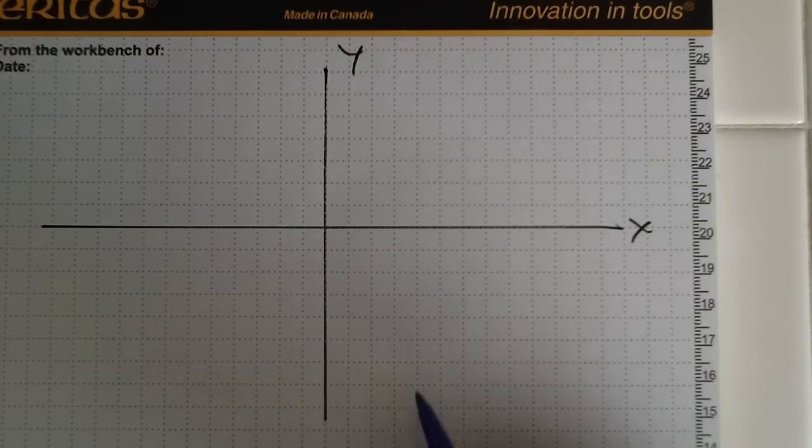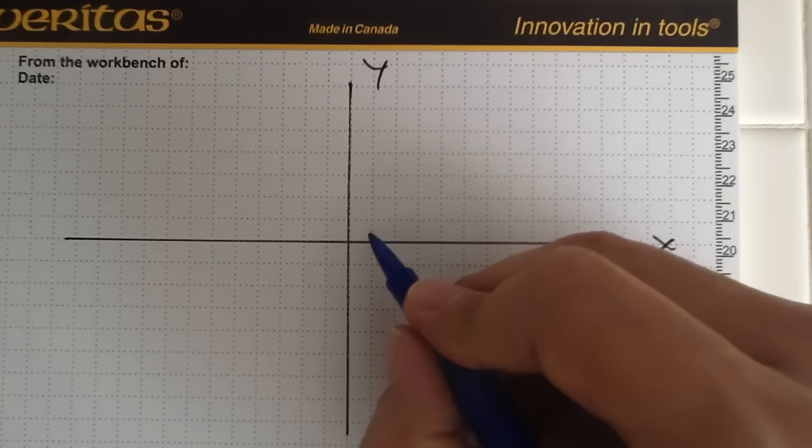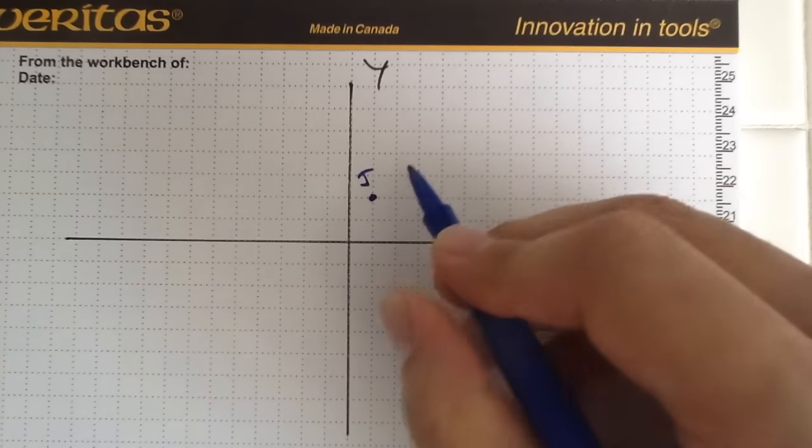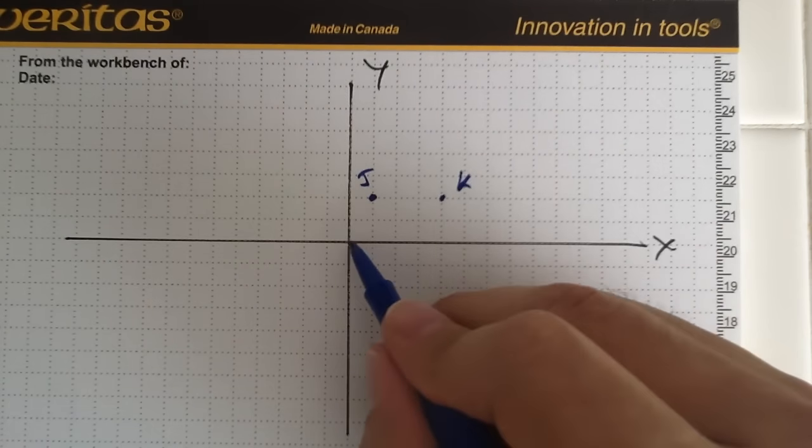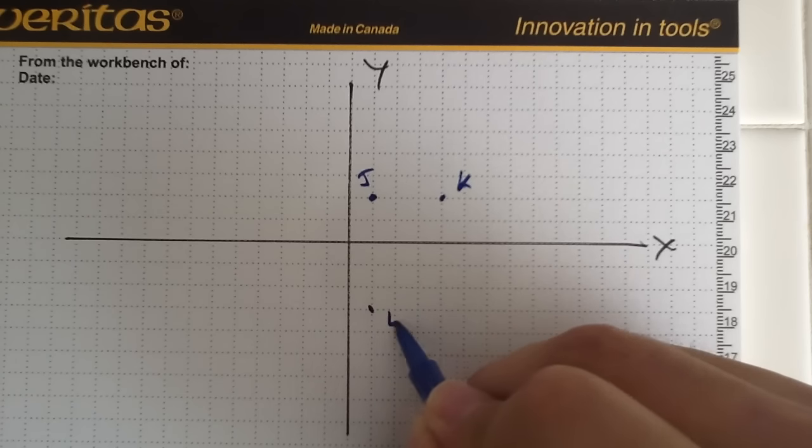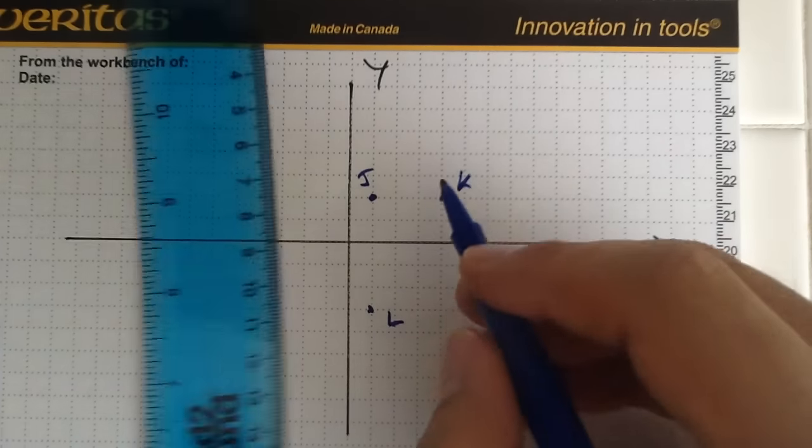All right, so first thing, of course, we would do is graph the triangle they're asking, which is 1, 2, so that's J, 4, 2, which is K, and L, which is 1, negative 3. All right, so there's our triangle.